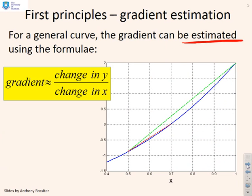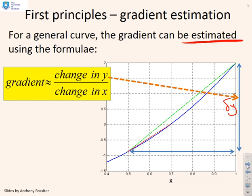Here's an example. We've got a curve and you'll see there's delta y - the change in the dependent variable - and along the bottom we have delta x, the change in the independent variable. So the gradient is approximately delta y over delta x, and for this case you'll see that gives the dotted green curve.